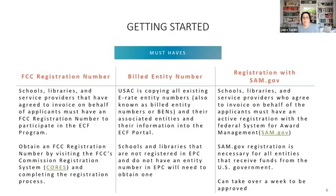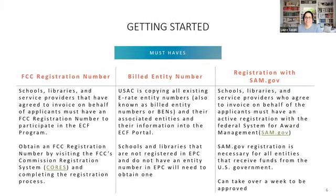Getting started: you need an FCC registration number, a USAC Billed Entity Number (BEN), and registration with SAM.gov. If you're already participating in E-Rate, you have an FCC registration number — no need to re-register. If you don't have one, there's a link to register. The BEN is information on the address and location receiving the bills. If you're not already registered with E-Rate, you can contact USAC to establish yourself with the program.